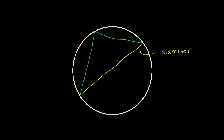What I'm going to show you in this video is that this triangle is going to be a right triangle, and the 90-degree side is going to be the side that is opposite this diameter. I won't label it just yet, because that would ruin the fun of the proof. Let's see what we can do to show this.